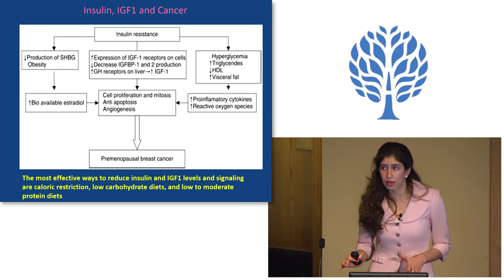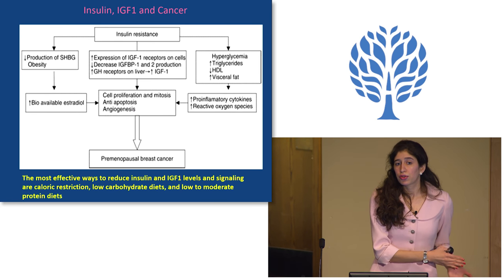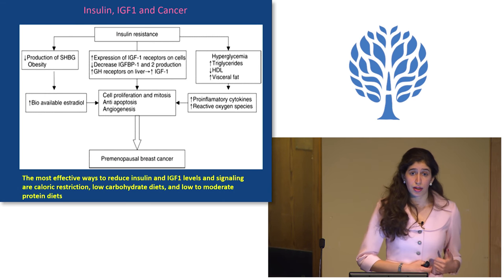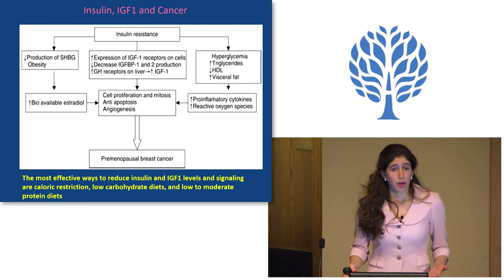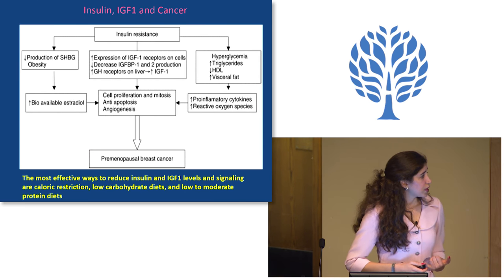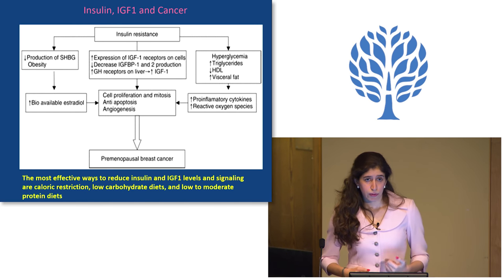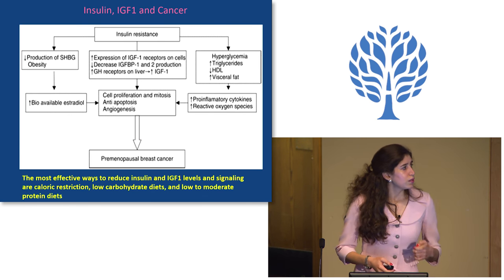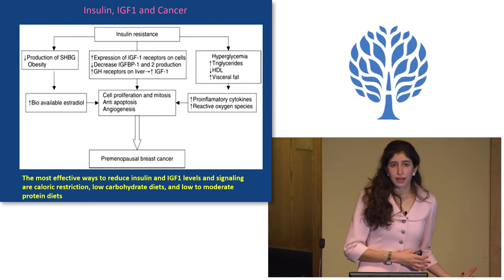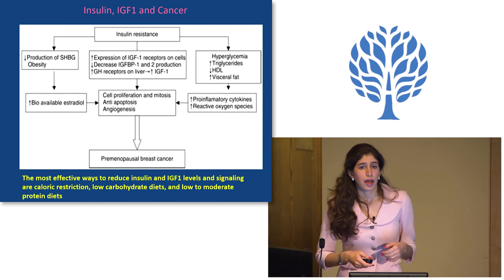This insulin/IGF-1 pathway tends to be more relevant in premenopausal breast cancer. Postmenopausal breast cancer tends to be more of an estrogen story, but since insulin also drives estrogen imbalances, it's still relevant. For premenopausal breast cancer, the stronger factors are insulin and IGF-1. The best way to reduce insulin and IGF-1 is a low-carbohydrate diet. Caloric restriction and prolonged fasting are also very effective in reducing insulin-like growth factor. In general, in the context of cancer, low to moderate protein diets are preferable, because too much protein can activate the IGF-1 pathway and mTOR pathway, which are important for cell growth and division.